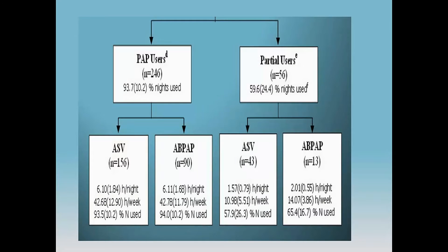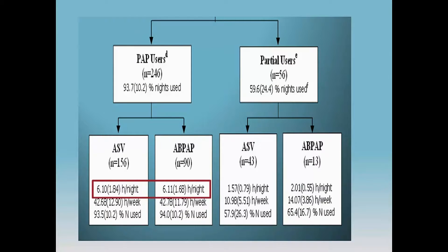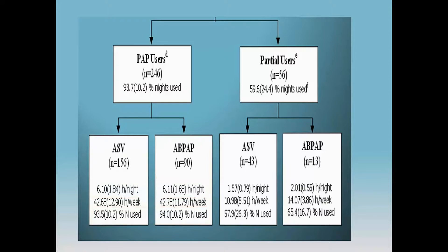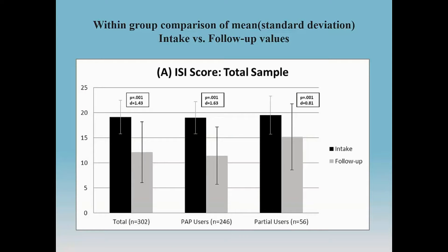The two groups are made up of 246 in the users group and 56 in the partial users group. The ASV and ABPAP patients were using quite a bit — more than six hours a night — and often averaging close to 90% of nights or more. The partial users were averaging more in the 10 to 15 hours per week. On the first slide of results, for total insomnia scores, whether it's the full sample, the regular users, or the partial users, everyone had a large effect size.